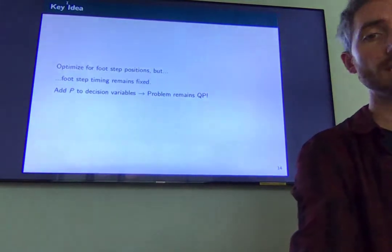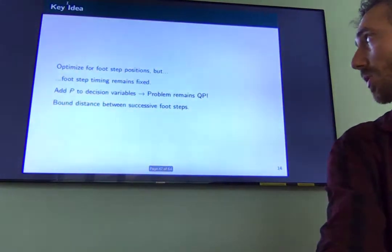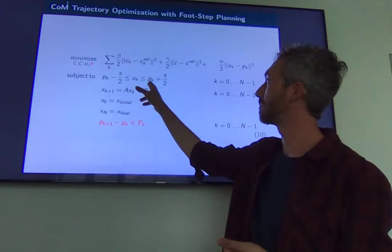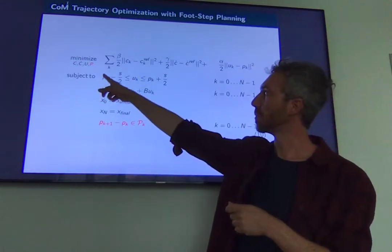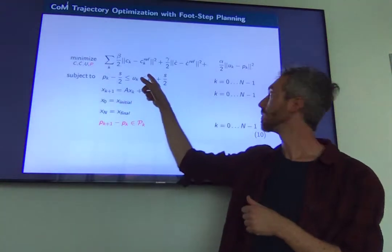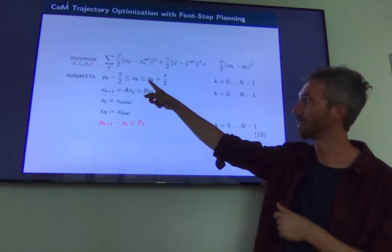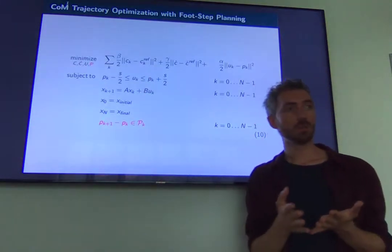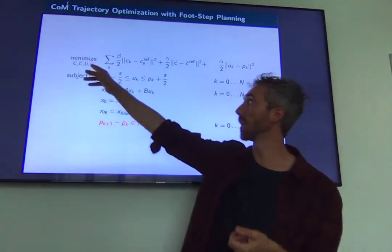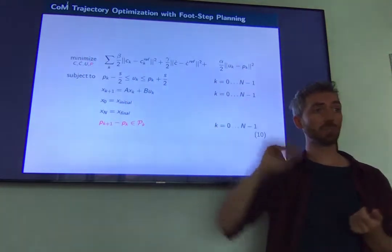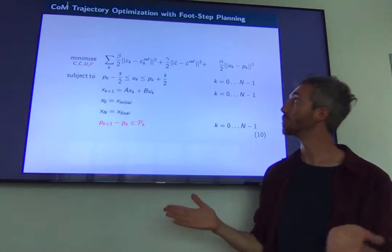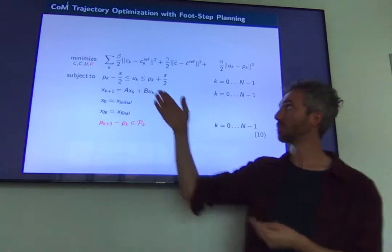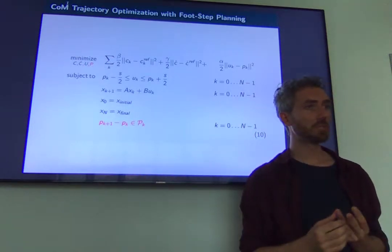The key idea is that if we observe the optimization problem we had before and look at p — which are basically the footstep positions — we can see that p also appears linearly in the problem, and it appears nowhere else. So if instead of saying that p is a constant specified by the user, we say that p is a variable and the optimizer can choose it for us, then we automatically have footstep planning combined with center of mass trajectory planning. The problem is slightly larger but it's not a big difference.